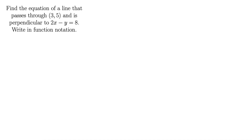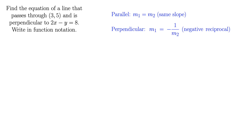Let's first remember some facts about parallel and perpendicular lines. Parallel lines have the same slope. Perpendicular lines have negative reciprocal slopes. So we need to find the slope of the line given and then we'll take the negative reciprocal of that.